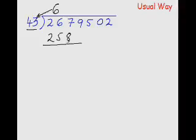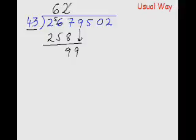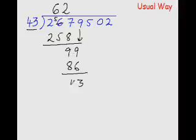Subtract: borrow 1, so 17 − 8 = 9, and the remaining digit becomes 5. Drop the next digit down to get 99. Again, ask how many times 43 goes into 99 — hide the last digits, so 4 goes into 9 twice. Multiply: 2 × 3 = 6, 2 × 4 = 8. Subtract: 9 − 6 = 3, 9 − 8 = 1. Drop the next digit.